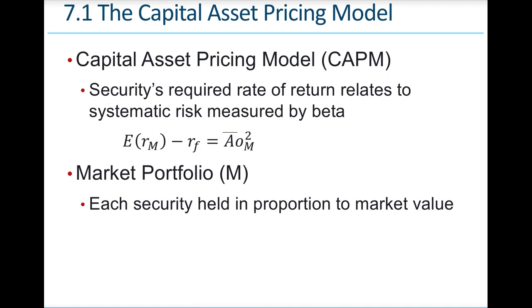This is the core concept. We expect riskier investments to provide higher returns than less risky investments because of our natural risk-averse stance as investors. We know beta measures risk, so stocks with higher betas should have higher returns on average than stocks with lower betas.